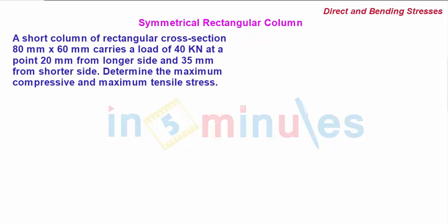Our problem statement is: a short column of rectangular cross-section 80 mm by 60 mm carries a load of 40 kN at a point 20 mm from the longer side and 35 mm from the shorter side. Determine the maximum compressive and maximum tensile stresses.